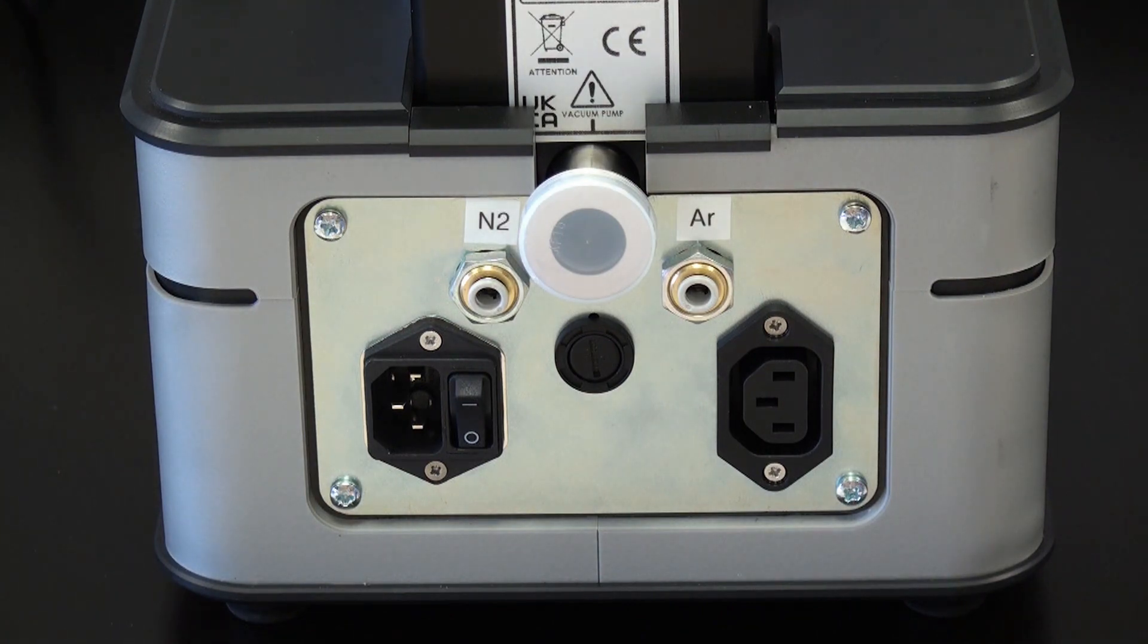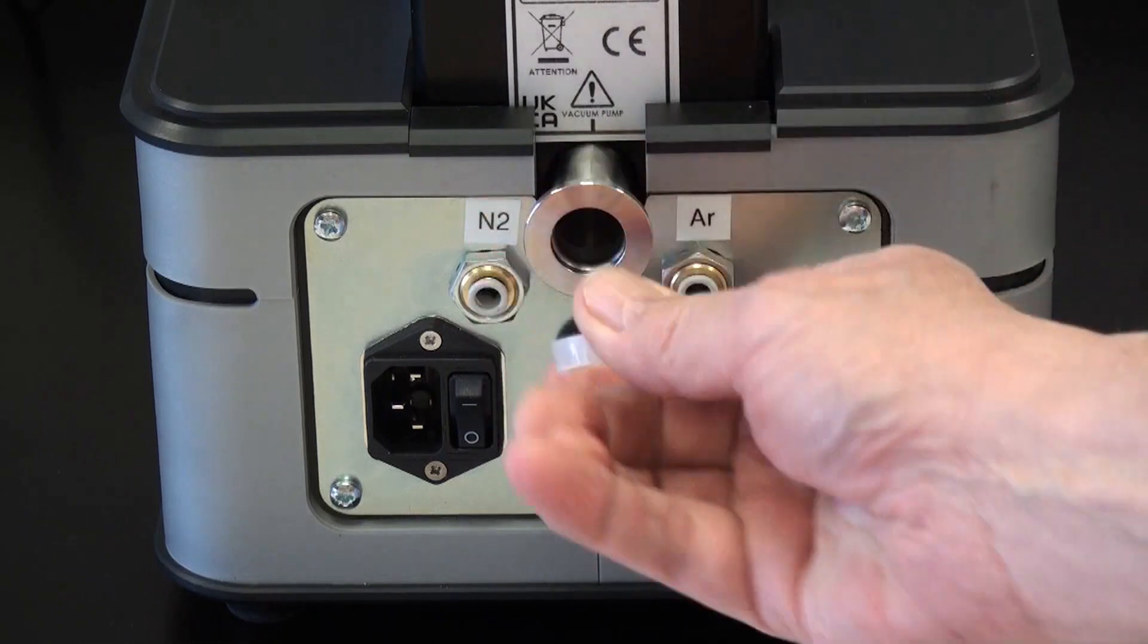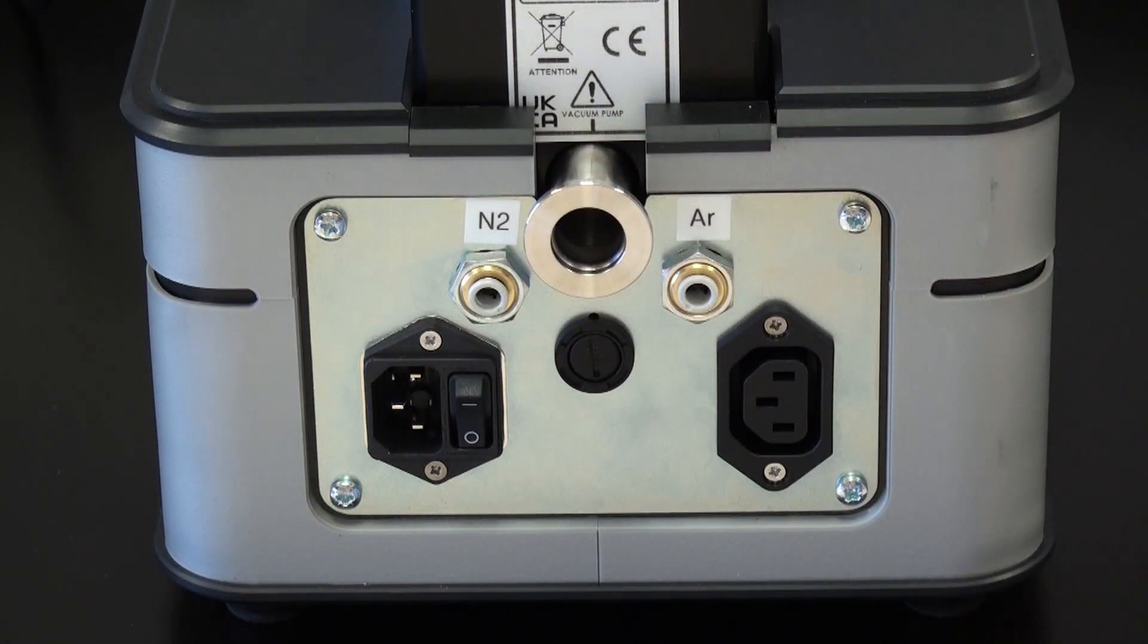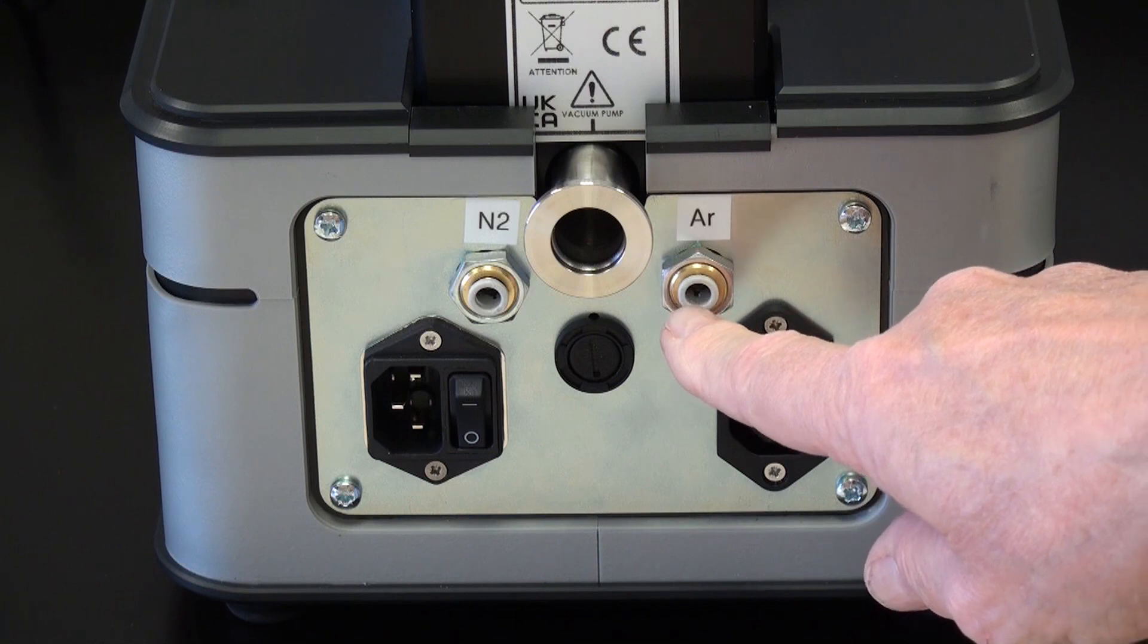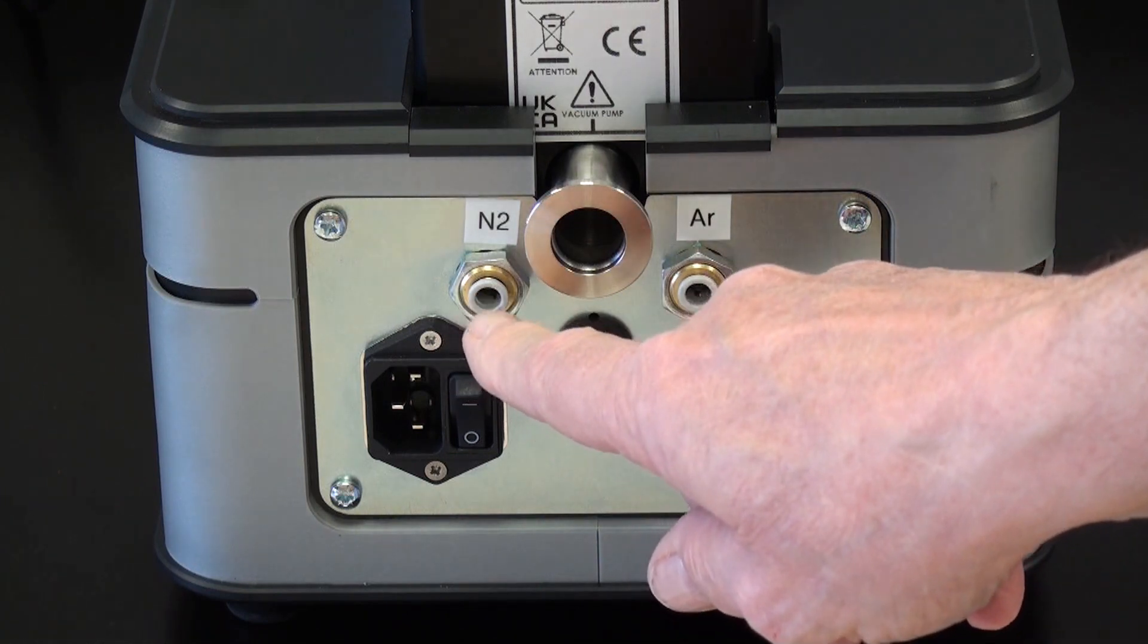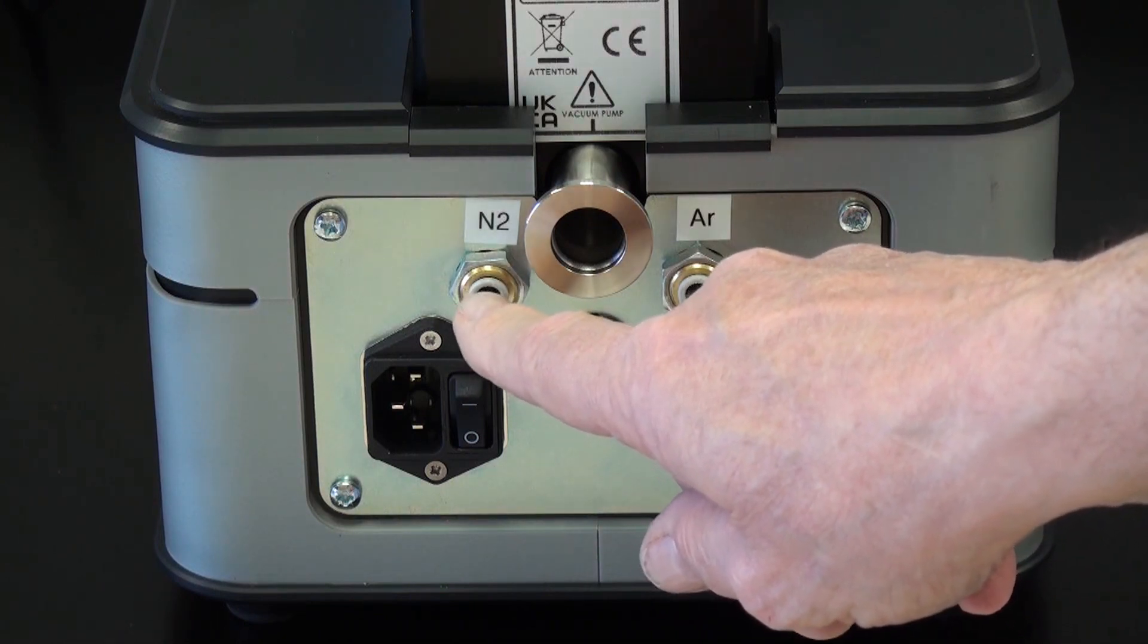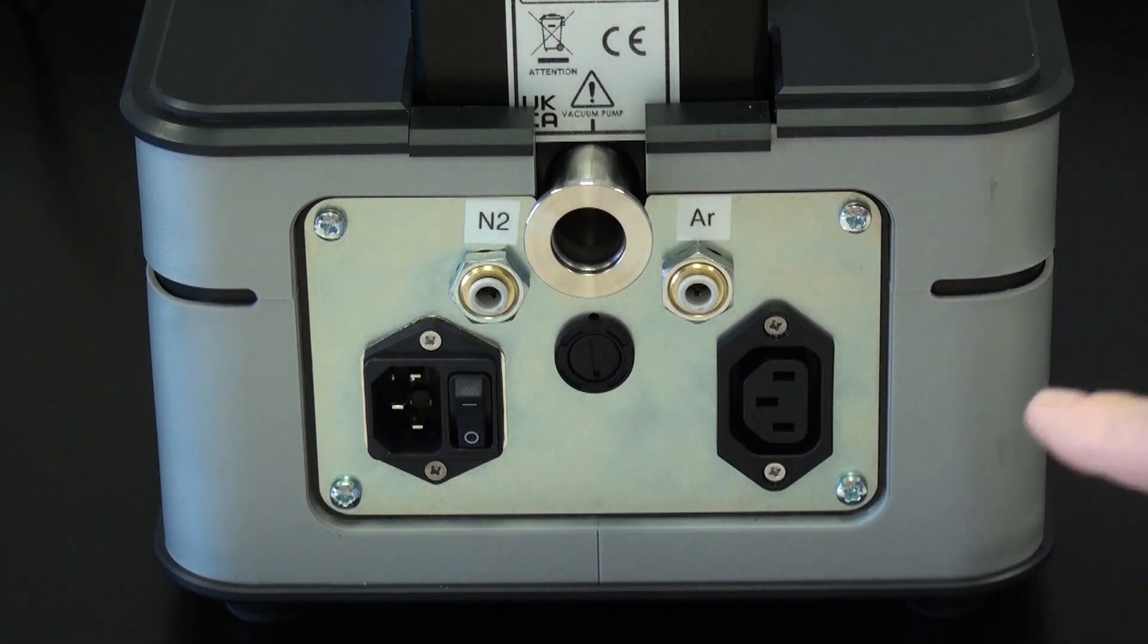On the back of the unit, you can see the connection for the 16KF standard vacuum line which comes with the system. This port is a 6 millimeter push port for the argon tube which is supplied with the instrument, as well as a nitrogen vent line 6 millimeter push tube if you decide to vent the system with nitrogen gas, which I recommend.